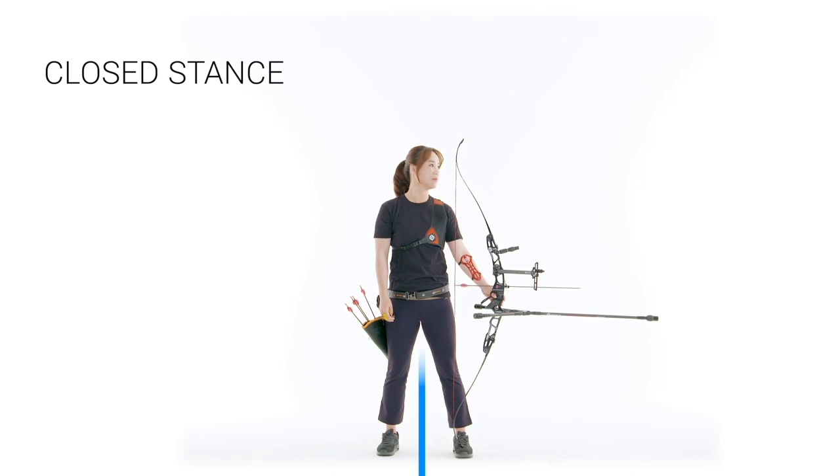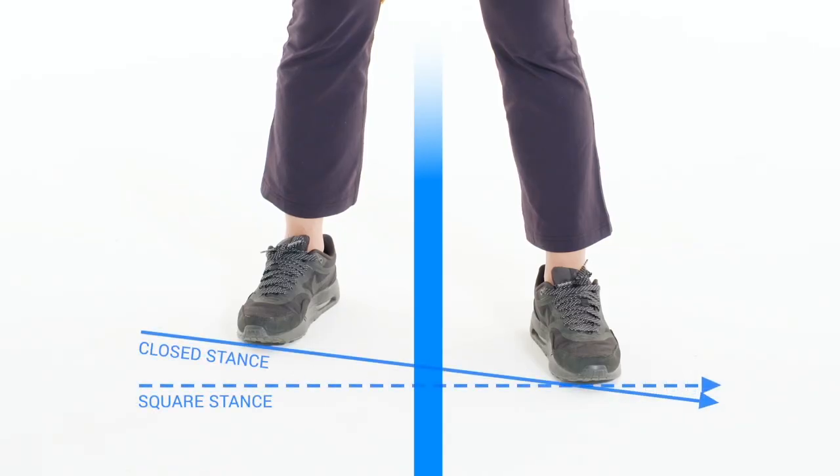Closed stance is the opposite placement compared to open stance and is rarely used in target archery.